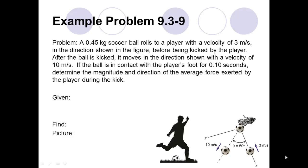This example is from the text Conceptual Dynamics, specifically example problem 9.3-9. The problem statement reads: a 0.45 kg soccer ball rolls to a player with a velocity of 3 meters per second in the direction shown in the figure before being kicked by the player. After the ball is kicked, it moves in the direction shown with a velocity of 10 meters per second. The ball is in contact with the player's foot for 0.10 seconds. Determine the magnitude and direction of the average force exerted by the player during the kick.